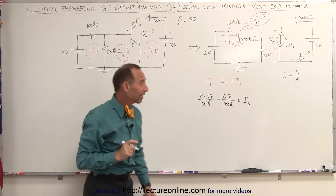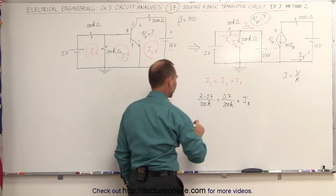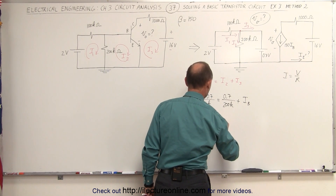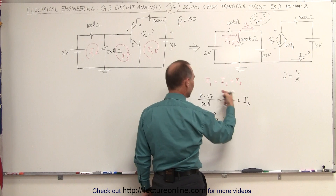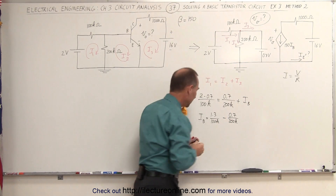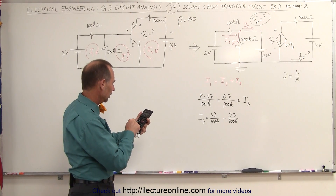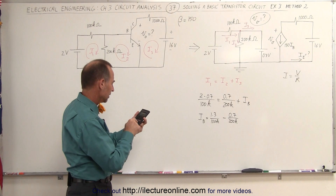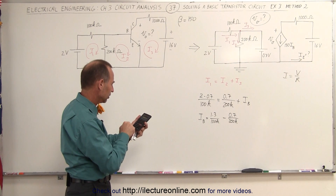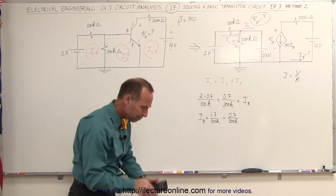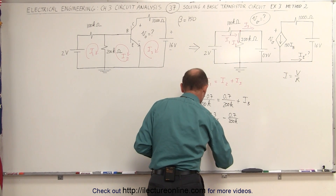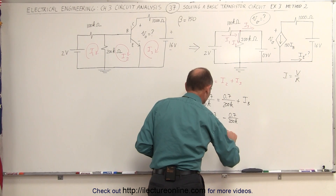From this we should be able to find the base current, because everything else is known on the circuit. So I base is equal to 1.3 volts divided by 100k, minus 0.7 divided by 200k. And now we need a calculator. So 1.3 divided by 100k minus 0.7 divided by 200k equals 9.5 microamps, which is the same base current that we got in the previous video — 9.5 microamps for the base current.